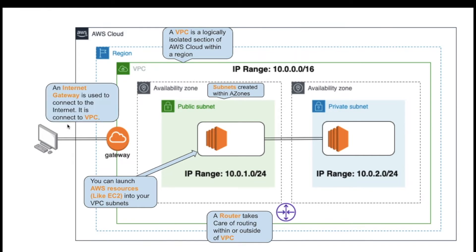Next is the internet gateway. If we want to access the internet, we also need an internet gateway. The internet gateway is attached to your VPC and you can only have one gateway per VPC. It is used for sending data out or in from the internet. Within a region you can create multiple VPCs — the default limit is 5 but you can request to increase this limit.